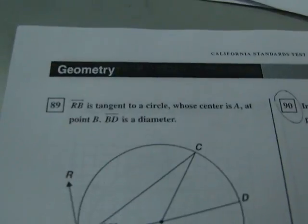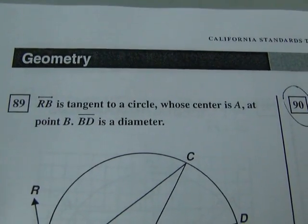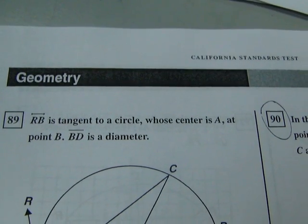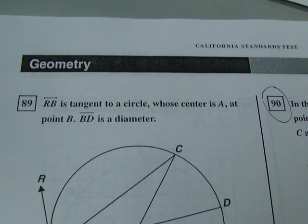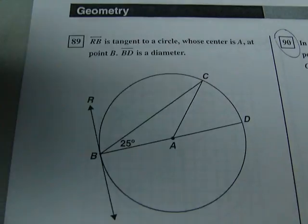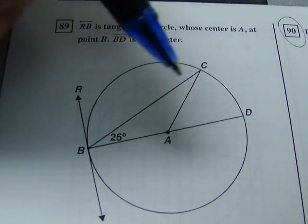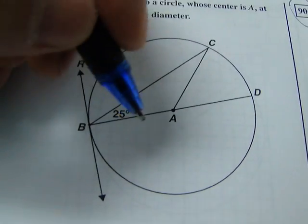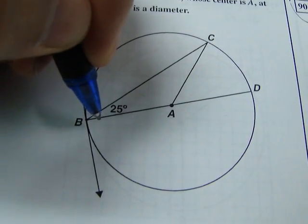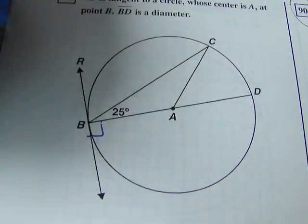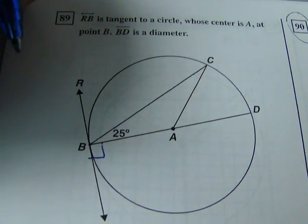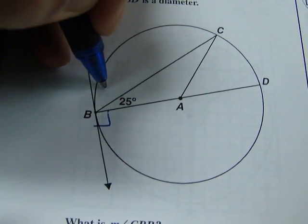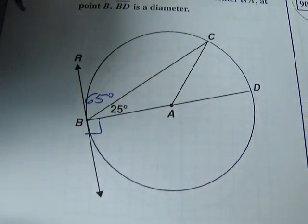Moving on to number 89. 89 says that line RB is tangent to a circle, whose center is A at point B. Segment BD is a diameter. Okay. So, here's your diameter. And this is a tangent. So, of course, that means this is a radius. And as we remember, tangents are perpendicular to radii. Other things we know is that if this is 25, then this angle here has got to be 65 degrees.